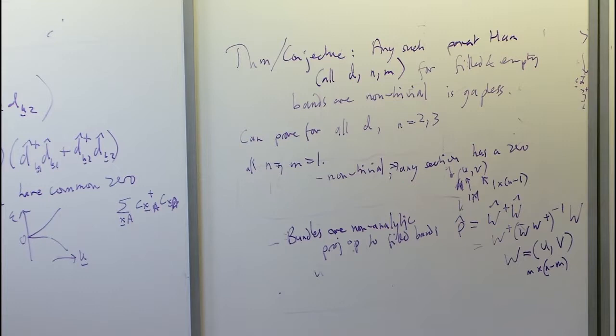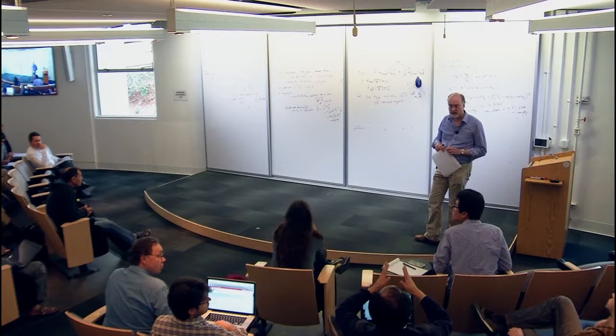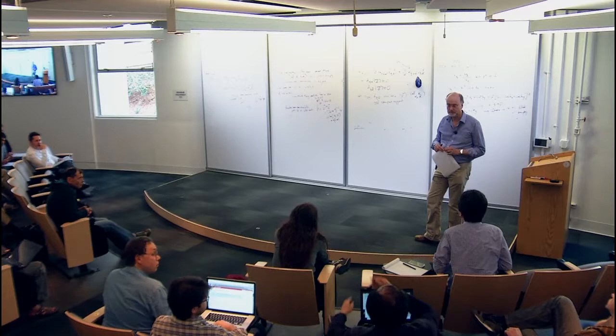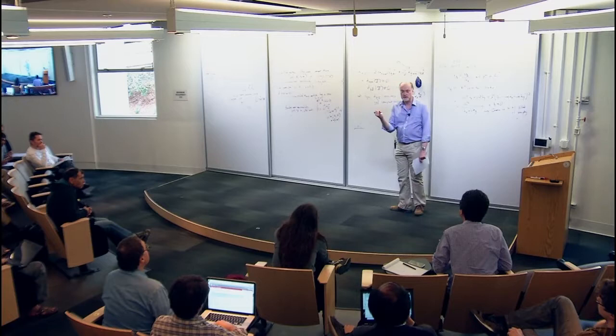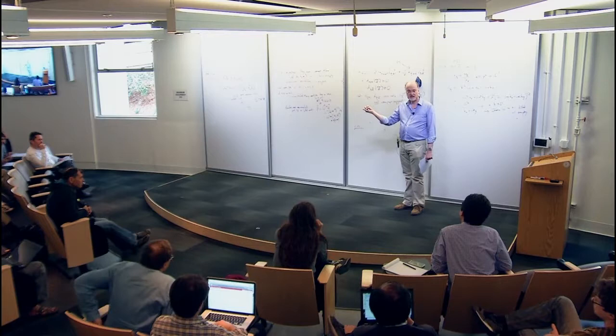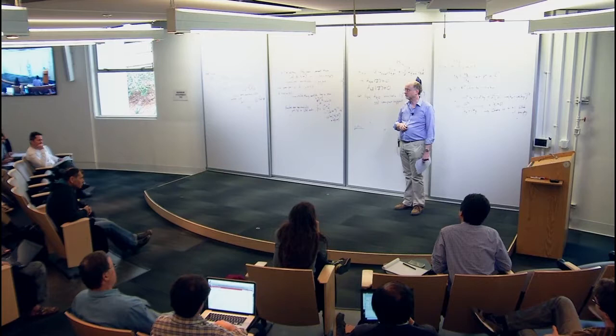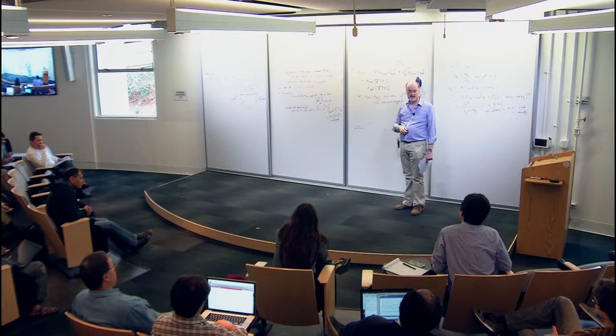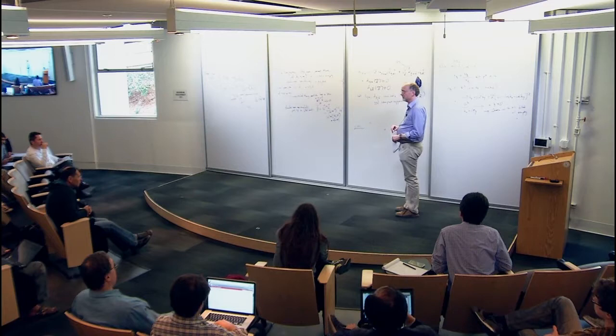If the single-particle Hamiltonian has exponentially decaying matrix elements and a gap around the Fermi energy, then all correlations decay exponentially and the bundles are analytic. Otherwise we can't guarantee anything. This is the right place to stop. Thank you for your attention.